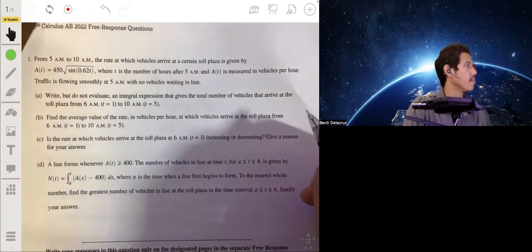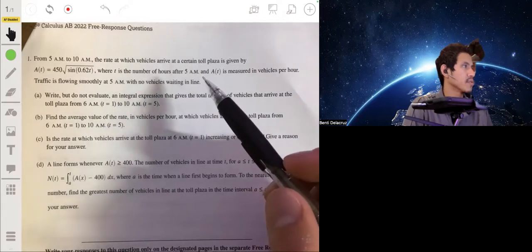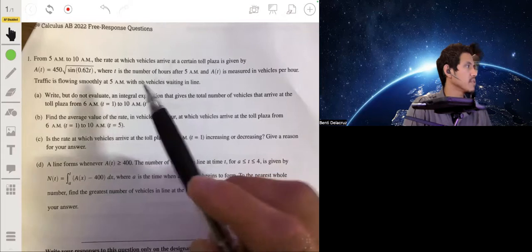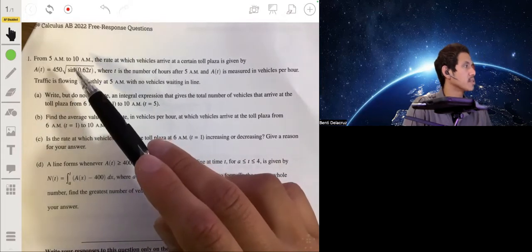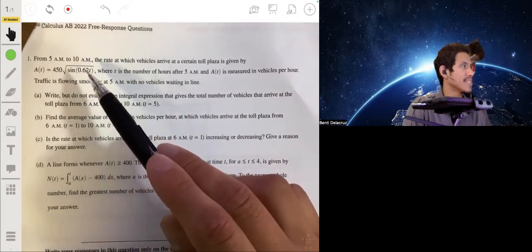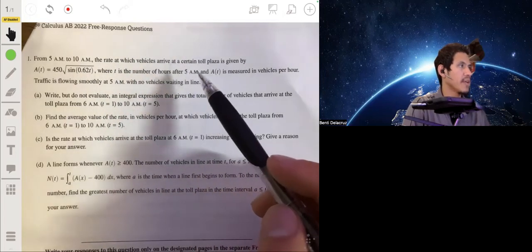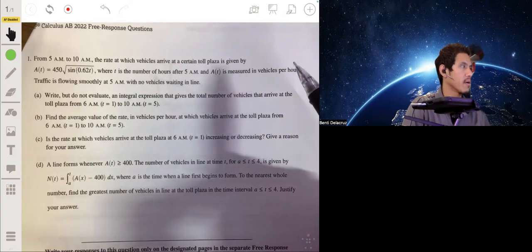All right, so problem one says that from 5 a.m. to 10 a.m., the rate at which vehicles arrive at a certain toll plaza is given by A(T), which is equal to 450 times the square root of the sine of 0.62T, where T is the number of hours after 5 a.m., and A(T) is measured in vehicles per hour.